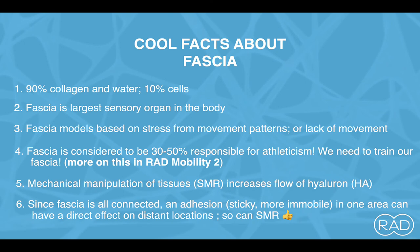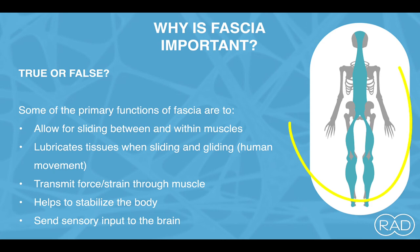Fact six: since fascia is all connected, an adhesion or immobile part of the body in one area can have a direct effect on distant locations — and so can SMR. Take the example of a restriction in the neck felt all the way down in the feet. We address that whole myofascial line — the superficial back line — going from the neck to the thoracic spine, mid-back, down to the hamstrings, calves, and feet. We go above, below, and beside the real problem areas to look at the body in a holistic manner, which is what will truly help free us up and help us move and feel better.